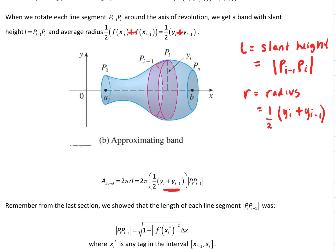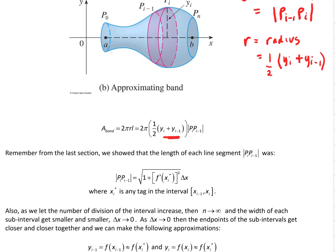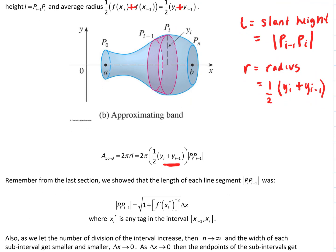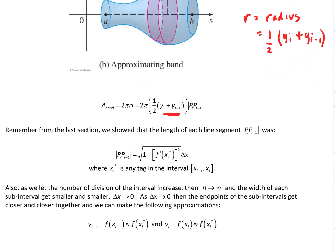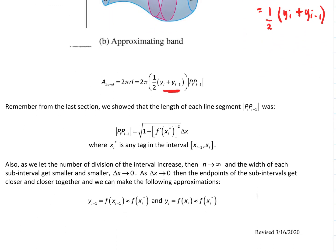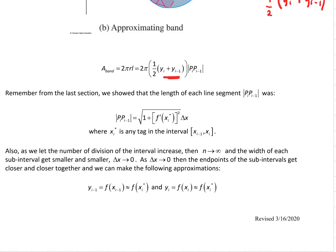Remembering from the last section, the actual length of that line segment — the slant height — goes back to arc length from 8.1, where we looked at those exact line segments. We had that proof using the mean value theorem showing that the length of the segment from p sub i minus 1 to p sub i equals the square root of 1 plus f prime of some tag on that subinterval squared, times delta x.